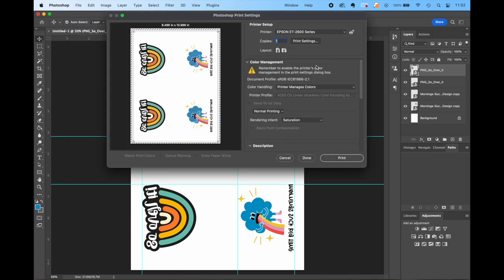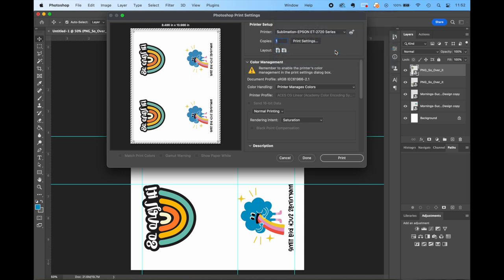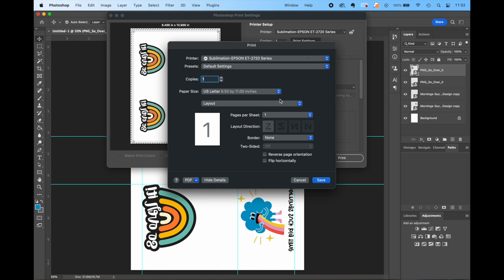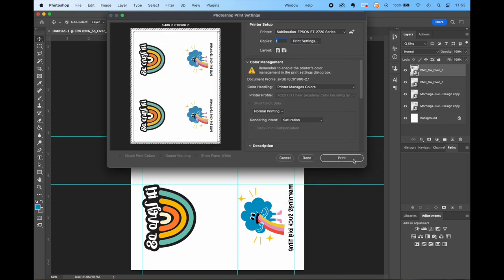And now we're going to go into the print settings. We're going to select one of our many sublimation printers and then go into the settings. Now, this is a new paper that we're going to be trying out, but we always start with premium presentation paper matte. Turns out that's a great setting for this paper, as well as high quality on the print quality. So now we go into print and head over to the printer.